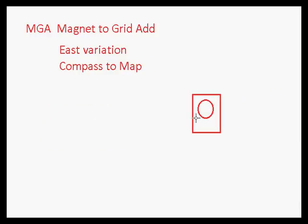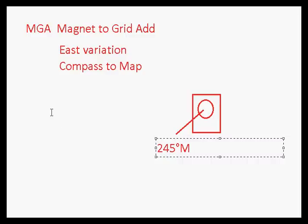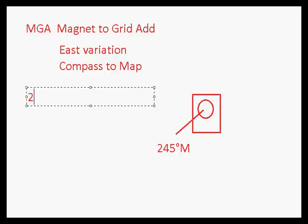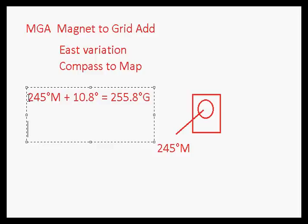Let's do another example: 245 degrees magnetic. To convert that to a grid heading, we take 245 degrees magnetic plus 10.8 degrees easterly variation, which gives us 255.8 degrees grid — rounded to 256 degrees grid, which we would draw on our grid map.